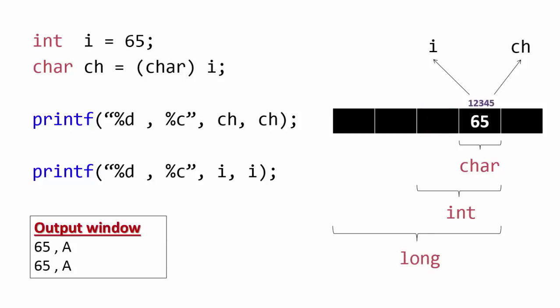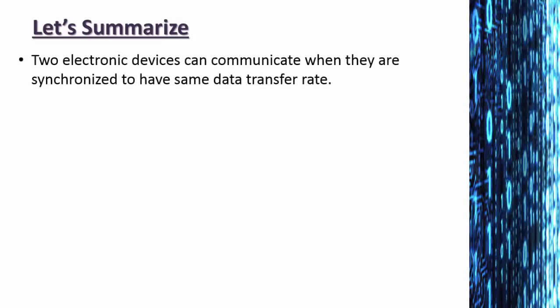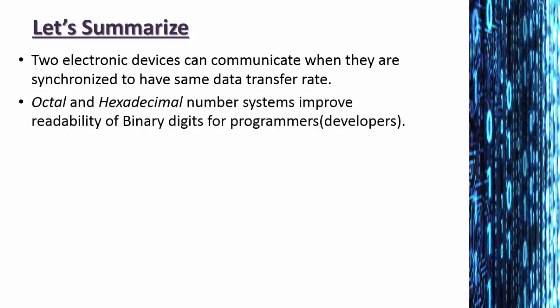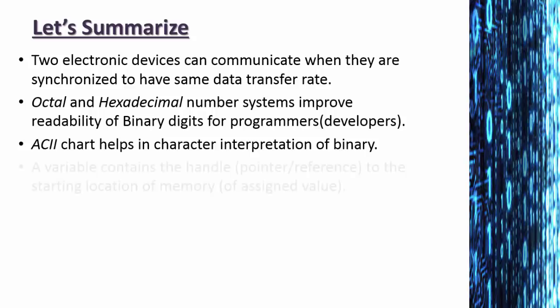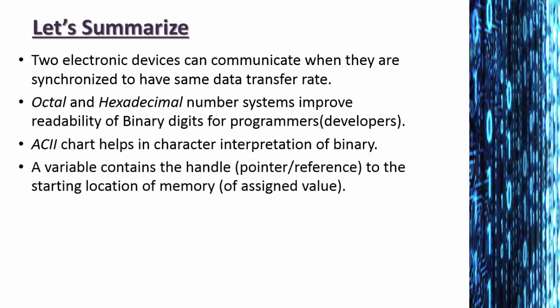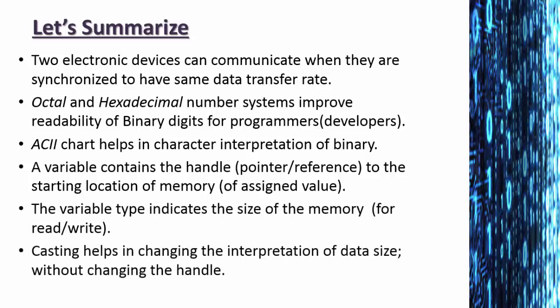Let us summarize. In this video we have learnt that two electronic devices can communicate when they are synchronized to have same data transfer rate. Octal and hexadecimal number systems improve readability of binary digits for programmers. ASCII chart helps in character interpretation of binary. A variable contains the handle to the starting location of memory. The variable type indicates the size of memory. Casting helps in changing the interpretation of data size without changing the handle. In the next video I am going to explain about interesting secrets of images.